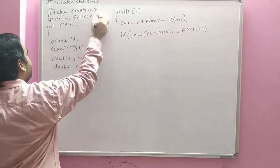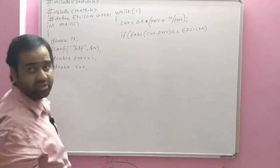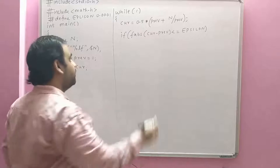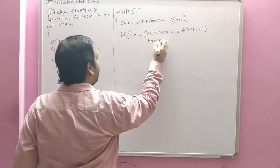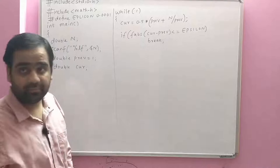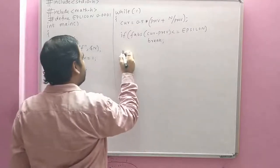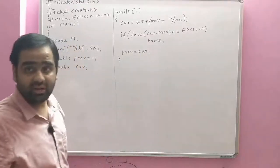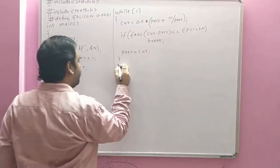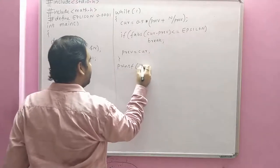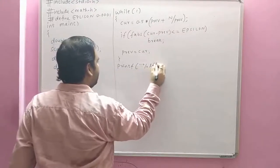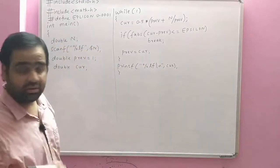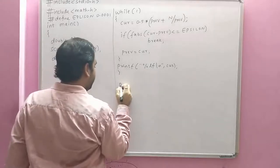We define epsilon as a macro: #define epsilon 0.0001 for accuracy to four decimal places. Inside the loop, if the absolute value of (current − previous) is ≤ epsilon, we break. Otherwise, previous = current for the next iteration. After the loop, we print the result with printf("%lf\n", current).